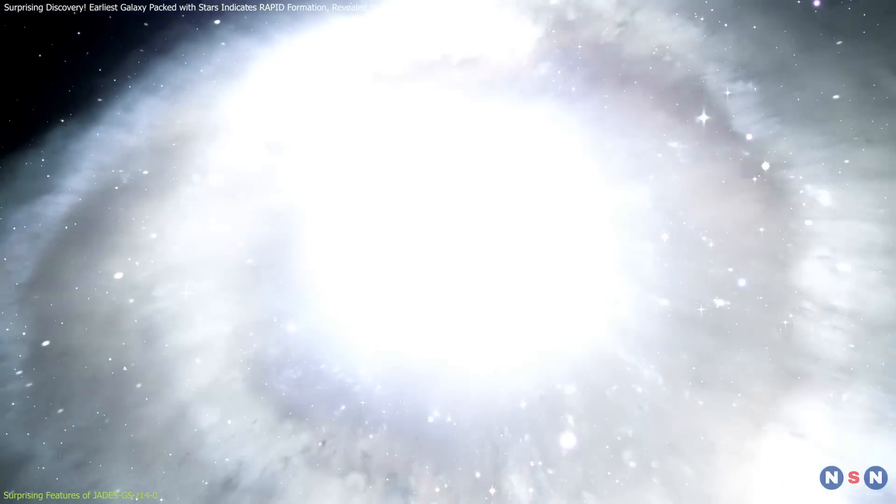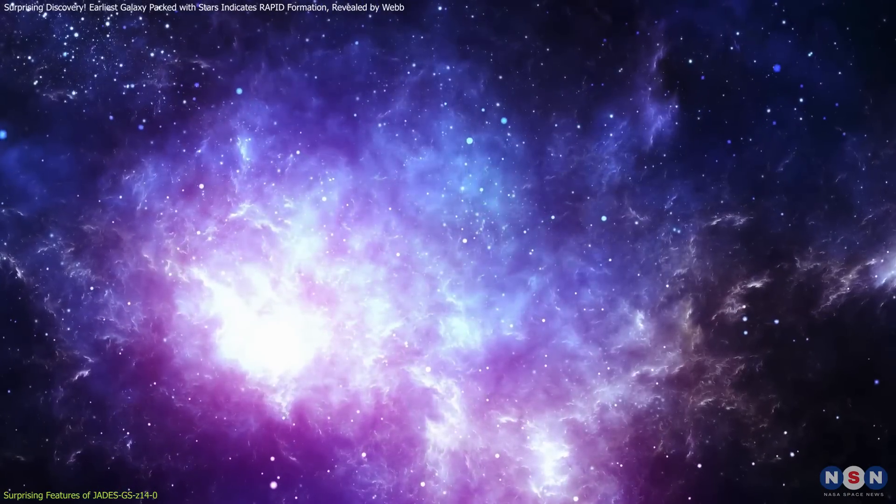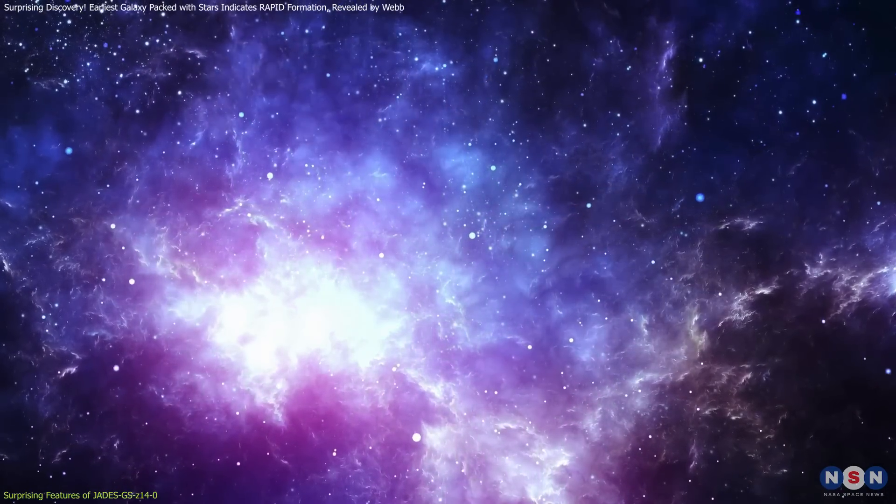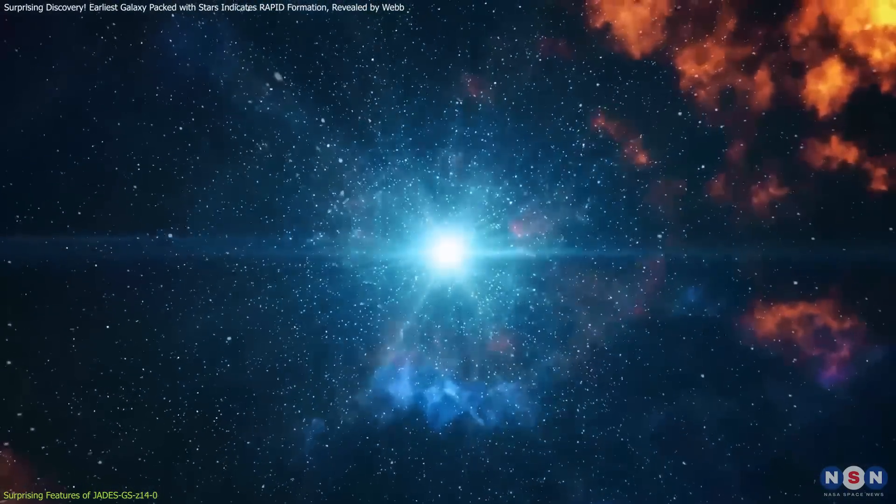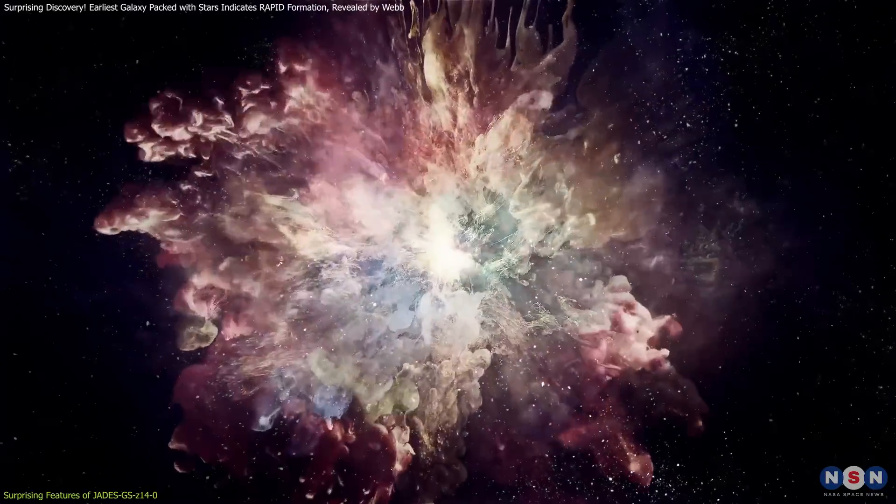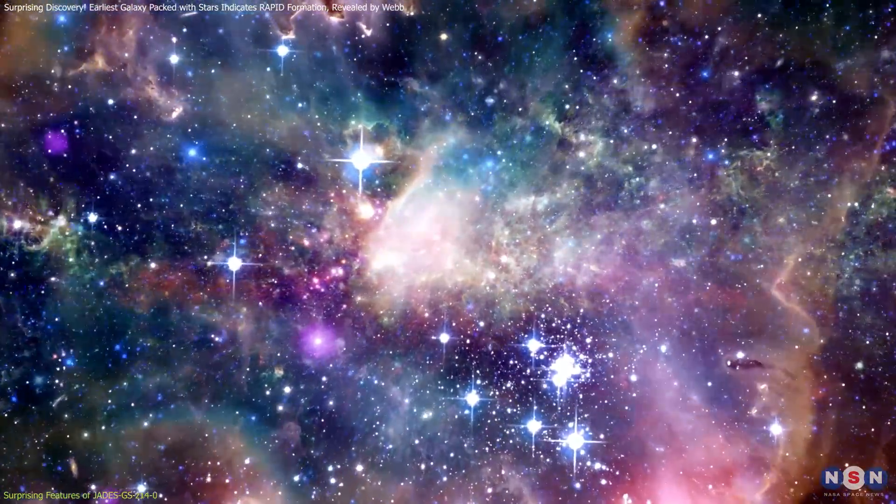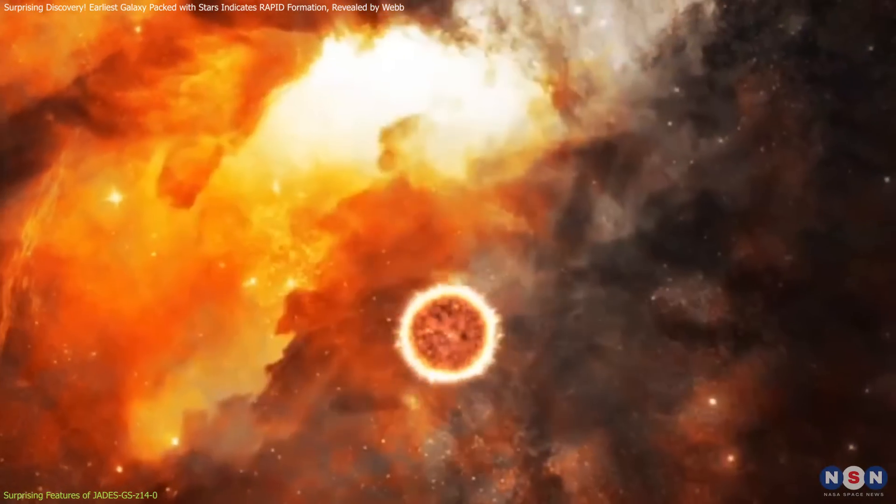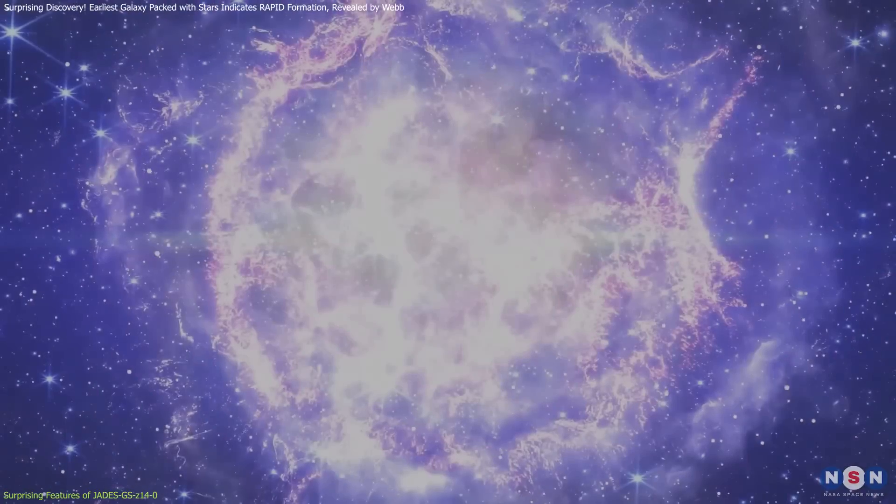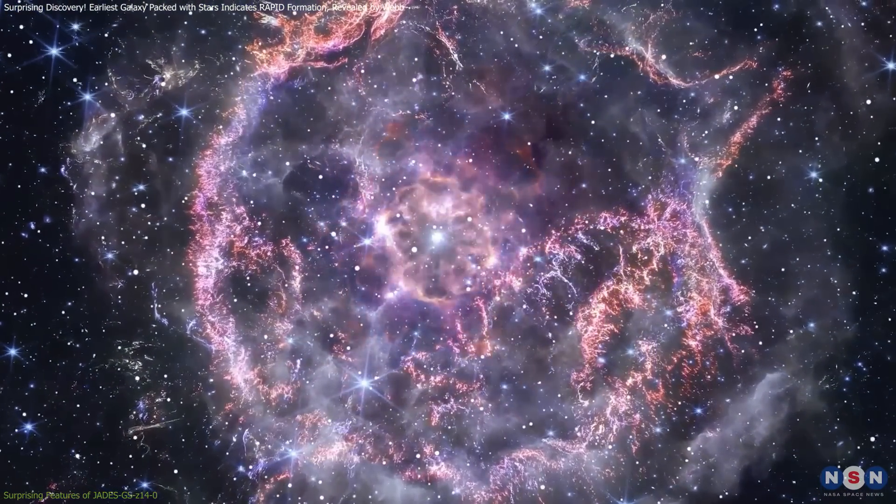Its rapid formation is also evident from its chemical composition. The presence of heavy elements such as oxygen indicates that several generations of stars have already formed and exploded as supernovae, enriching the galaxy with these elements. The high levels of dust and heavy elements provide further surprises. Typically, heavy elements like oxygen are formed in the cores of stars and spread through the galaxy by supernovae, which suggests an unexpectedly rapid progression of stellar life cycles within this galaxy.